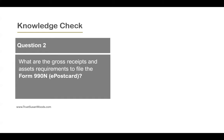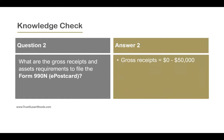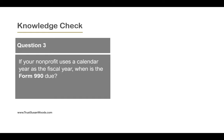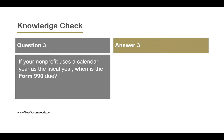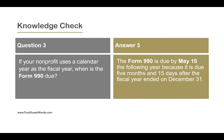Question two: What are the gross receipts and assets requirements to file the Form 990-N e-postcard? Answer: Gross receipts are between $0 and $50,000, and assets are not applicable. Question three: If your nonprofit uses the calendar year as the fiscal year, when is the Form 990 due? Answer: The Form 990 is due by May 15th the following year, because it is due five months and 15 days after the fiscal year ended on December 31st.